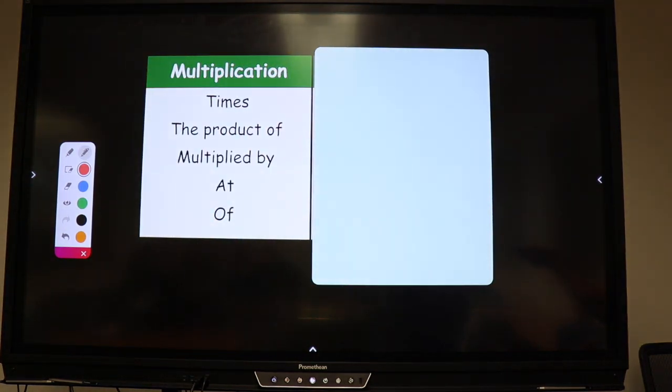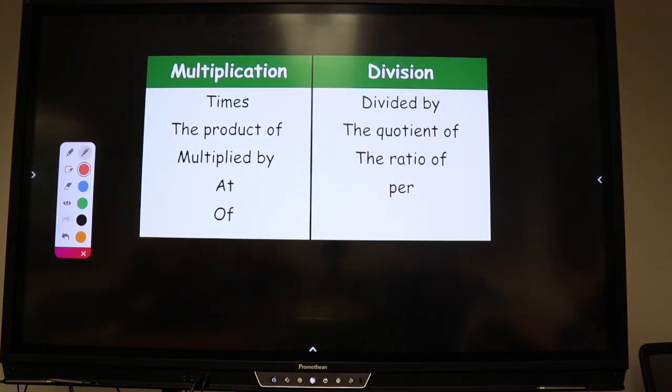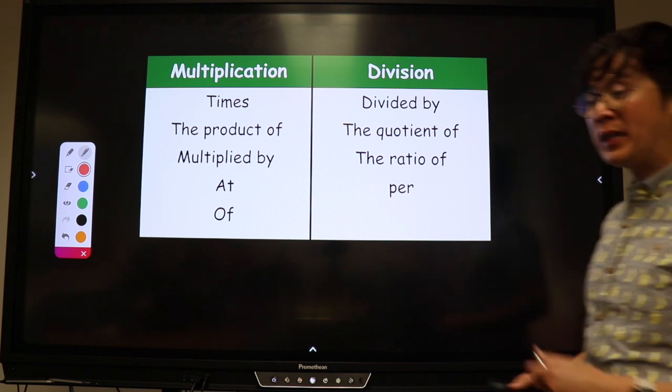This is multiplication, and this is division. For multiplication we use, of course, 'times' - that's the most popular verbal phrase for multiplication - 'the product of,' 'multiplied by,' 'at,' 'of.' And for division: 'divided by,' 'the quotient of,' 'the ratio of,' and 'per.'